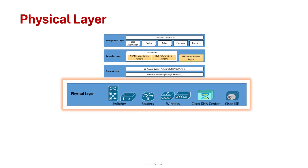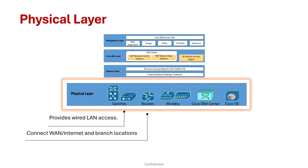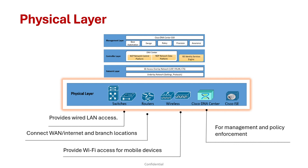Starting with the physical layer. The physical layer consists of network devices such as Cisco switches, which provide wired LAN access; Cisco routers, which connect WAN, internet, and branch locations; and Cisco wireless, which includes WLCs and APs providing wireless access for mobile devices. It also includes Cisco controller appliances — Cisco DNA Center and ISE — for management and policy enforcement. Cisco DNA Center and ISE are the brains of the operation, managing and automating the network.